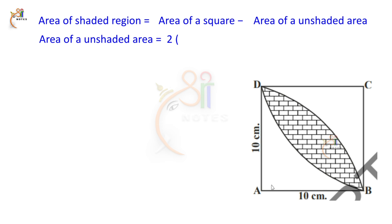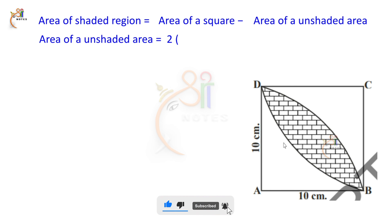A square always has 90 degrees at each corner. The portion of a circle within a 90-degree angle is a quadrant. If the angle were 180 degrees, it would be a semicircle. So here, the area within 90 degrees is a quadrant. Subtract the quadrant from the square's area.